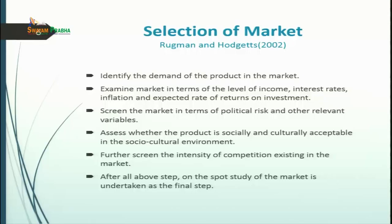The fifth step is to further screen the intensity of competition existing in the market. If competition is quite high, it will be very difficult to initially penetrate the market because competitors are already enjoying economy of scale and can quickly reduce prices, creating cutthroat competition. When selecting a market, you need to determine whether red ocean, blue ocean, or white ocean strategies are required to enter the host country.